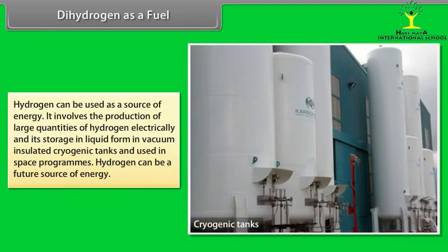Dihydrogen as a fuel: Hydrogen can be used as a source of energy. It involves the production of large quantities of hydrogen electrically and its storage in liquid form in vacuum insulated, cryogenic tanks and used in space programs. Hydrogen can be a future source of energy.